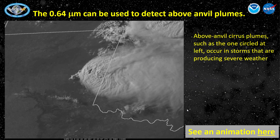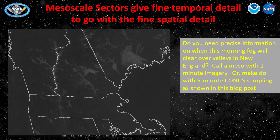This example shows a distinct above-anvil plume with a severe thunderstorm over Texas and Oklahoma. The beauty of visible imagery, especially at a one-minute time step — don't be afraid to call mesos — is that you can see the evolution of the cloud-top structures that are associated with strong convection. Mesoscale sectors supply their data at one-minute time steps.